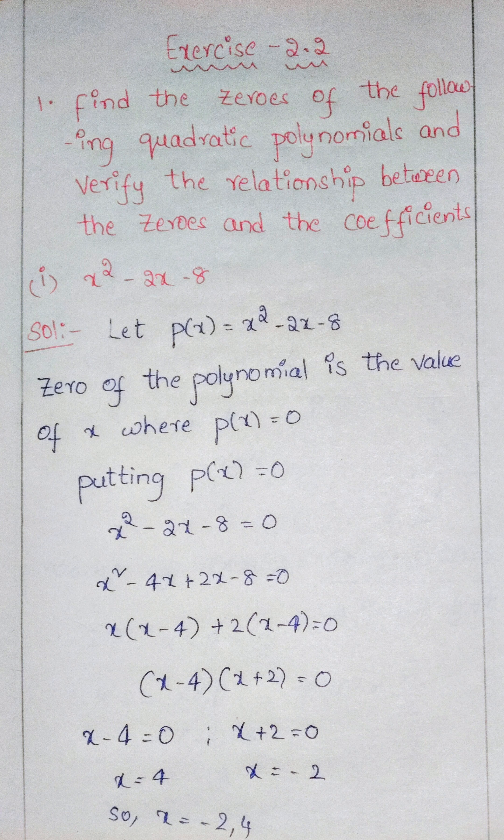x squared minus 2x minus 8 equals 0. So let us factorize: x squared minus 4x plus 2x minus 8 equals 0. Taking common terms from each pair of terms.